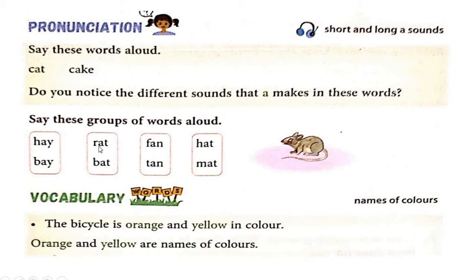Next group: R-A-T, rat. B-A-T, bat. Rat, bat. Then F-A-N, fan. T-A-N, tan. Then H-A-T, hat. M-A-T, mat. See the difference in how I am speaking. You have to pronounce the same way: C-A-T, cat; C-A-K-E, cake. See the difference of the A sound.